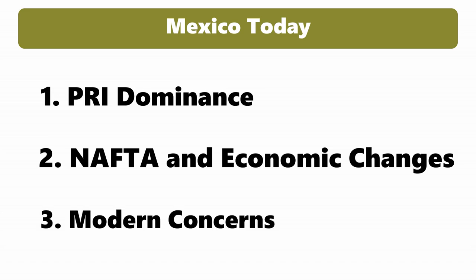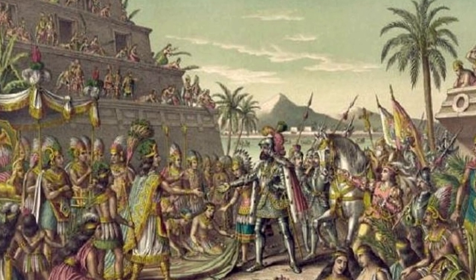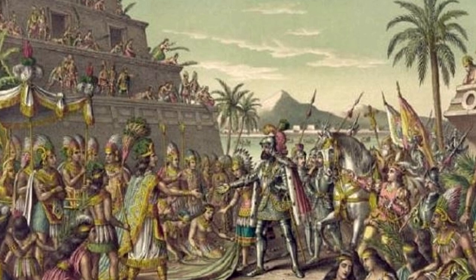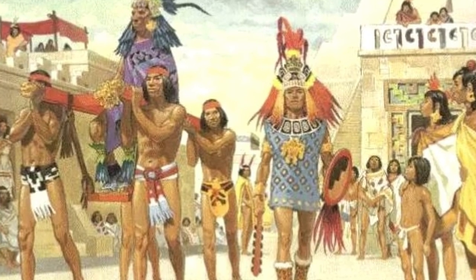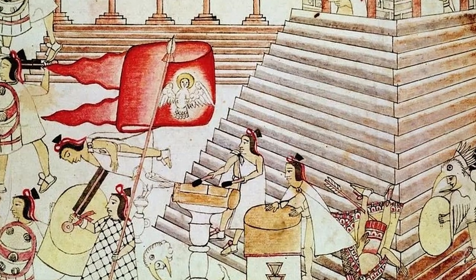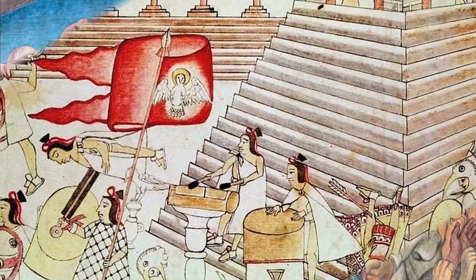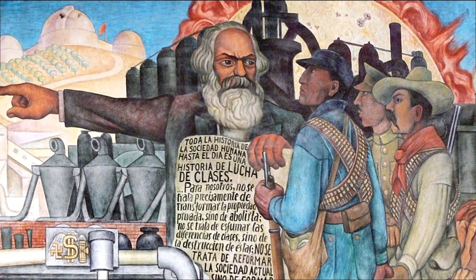3. Modern Concerns: Mexico has modern concerns such as drug trafficking and crime, political corruption, and immigration issues. Mexico's history is a complicated tapestry of indigenous cultures, colonial domination, independence battles, and social revolutions. It has shaped Mexico's identity, culture, and political landscape, resulting in a diversified and historically rich country.